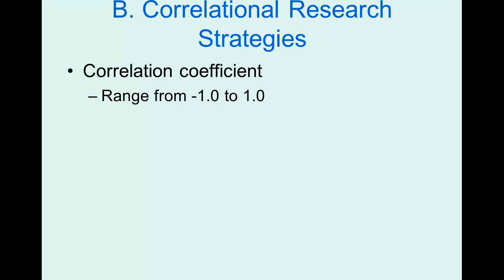The correlation coefficient tells us two things. First, it tells us the direction of the relationship. A positive value means a positive correlation — both variables go in the same direction, so as one goes up the other also goes up. A negative value means a negative relationship — the variables move in opposite directions, so as one goes up the other goes down. It also tells us the strength: values closer to zero are weak, while values close to negative one or positive one are strong.